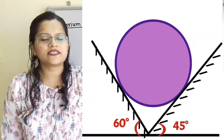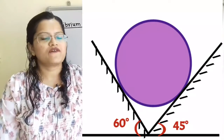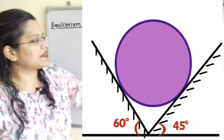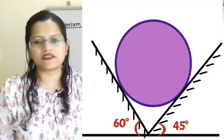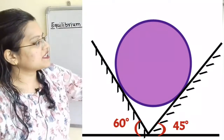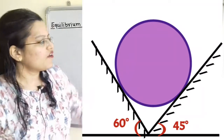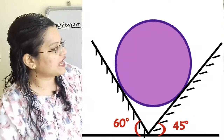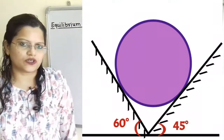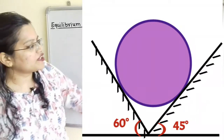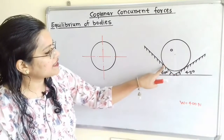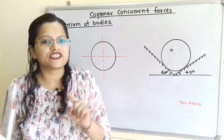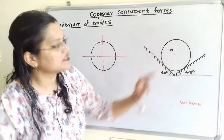Let us understand how to draw the free body diagram for a system which is in equilibrium. If we observe the given system, here is the sphere which has weight 400 N, and it is in contact with the surface of the trough. One surface makes an angle of 60 degrees with the horizontal and the other surface makes an angle of 45 degrees with the horizontal. At the point of contact between the sphere and the trough, there is a normal reaction R which will act, and this normal reaction R passes through the center of the sphere.